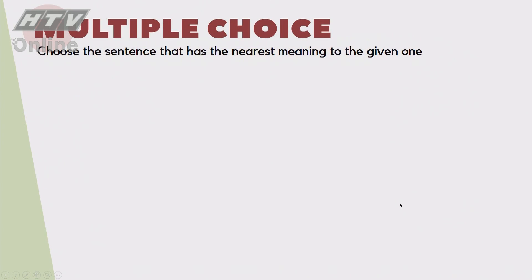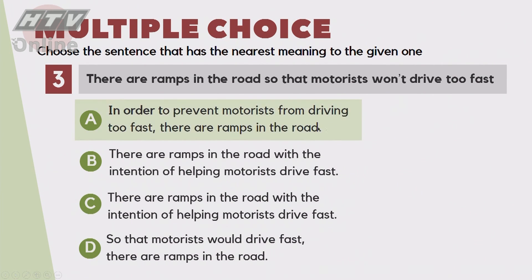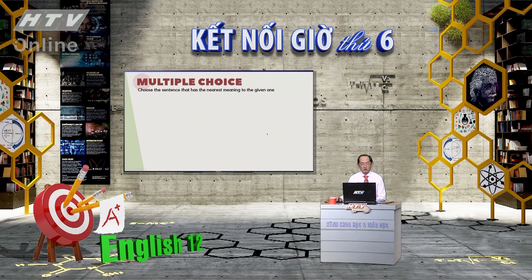Câu số 3: 'There are ramps in the road so that motorists won't drive too fast.' Lưu ý: 'motorist' không phải là người lái xe máy mà là 'someone who drives a car.' Trong bốn đáp án A, B, C, D: đáp án A là chính xác: 'In order to prevent motorists from driving too fast, there are ramps in the road.'